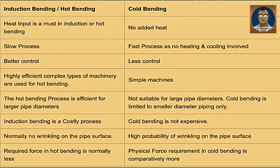Let us have a tabular comparison of hot and cold bending. In induction and hot bending, heat input is a must; cold bending requires no added heat. Induction bending is a slow process, while cold bending is a fast process with no heating and cooling involved. Induction bending has better control but cold bending has less control over the bend angles. Induction bending machines are highly efficient but very complex, whereas cold bending uses a very simple machine. Hot bending is efficient for larger pipe diameter, while cold bending is limited to smaller piping.